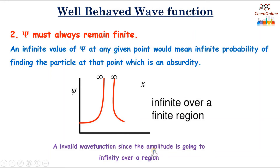So this is an invalid wave function — ψ is invalid because the amplitude is going to infinity over a region. So ψ cannot be infinite at any point; the value of ψ must always remain finite.